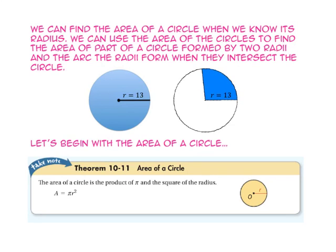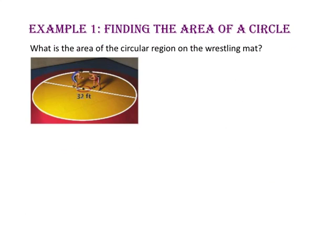Let's begin with the area of a circle. To find the area of a circle, we use the product of pi and the radius squared. In example 1, we will find the area of a circle — specifically, what is the area of the circular region on the wrestling mat?